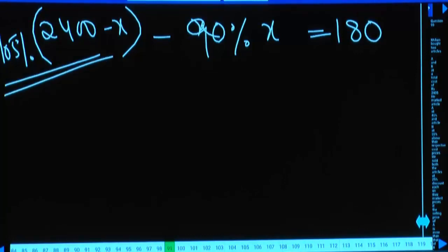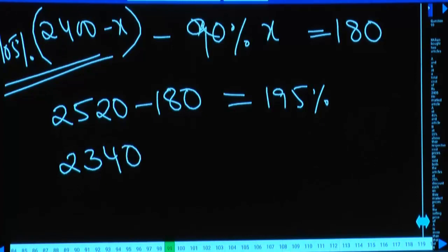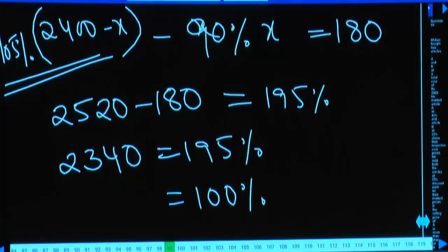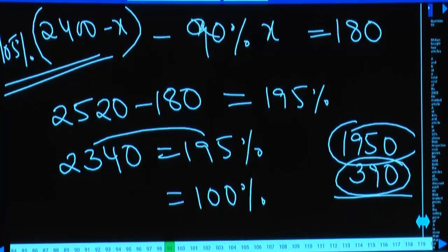105% of 2400: 10% = 240, 5% = 120, so 105% = 2520. Taking 180 to left side gives minus 180. On left side: 105% of (2400−x) minus 90% of x = 180. 2520 − 105x% − 90x% = 180. That gives 195% of x = 2340. 195 × 10 = 1950, plus 2 × 195 = 390; total 12 times 195 = 2340. So x = 1200.